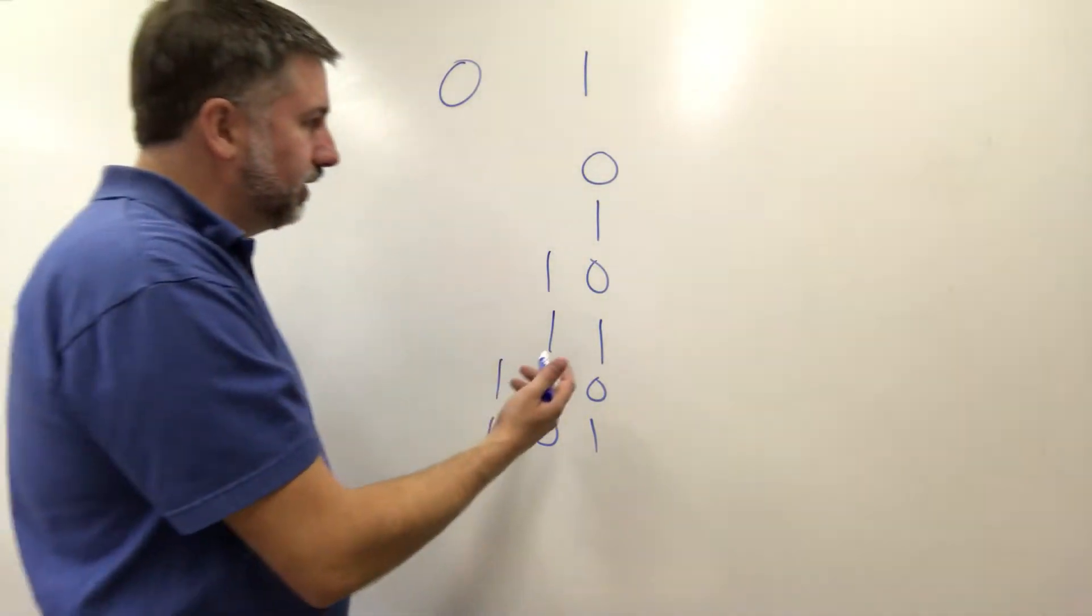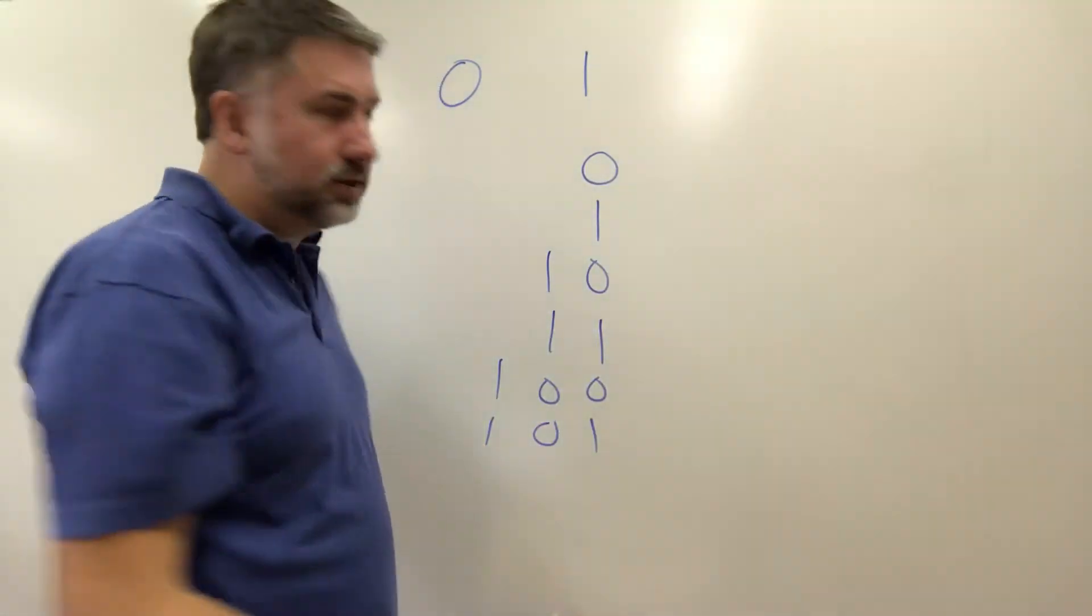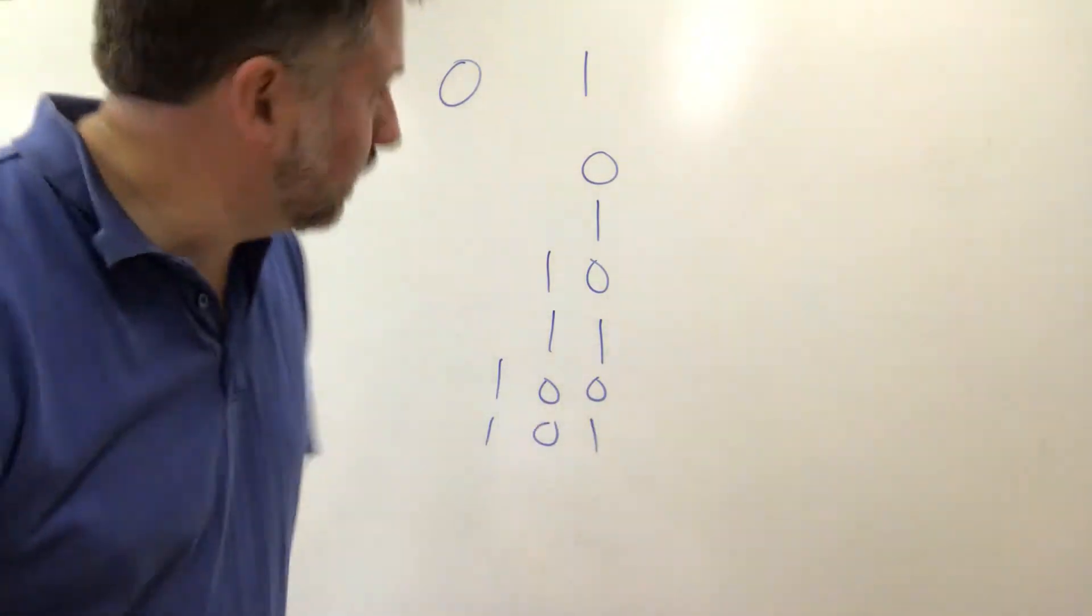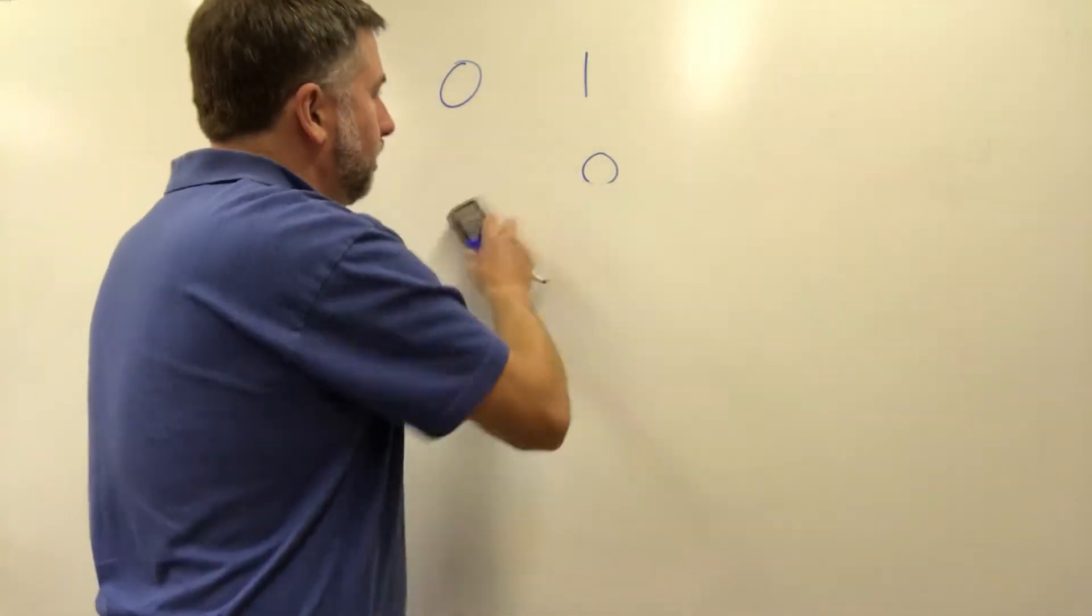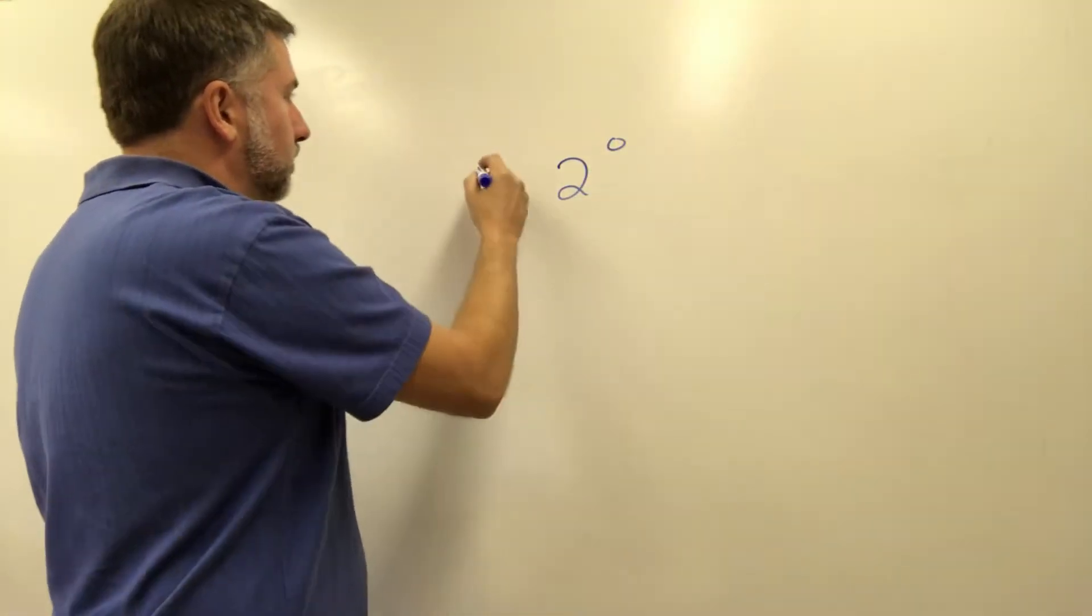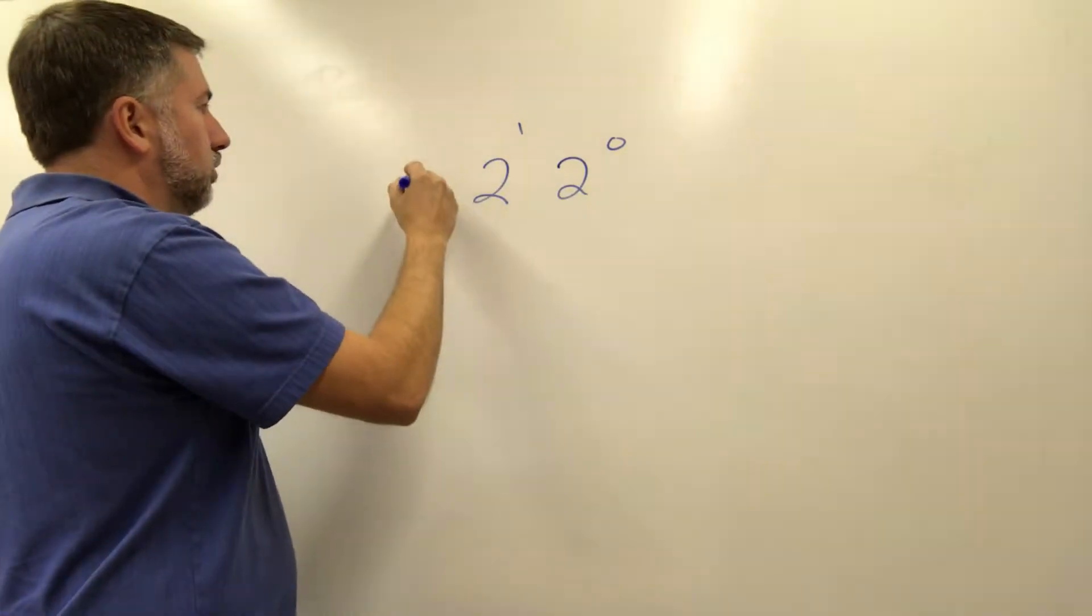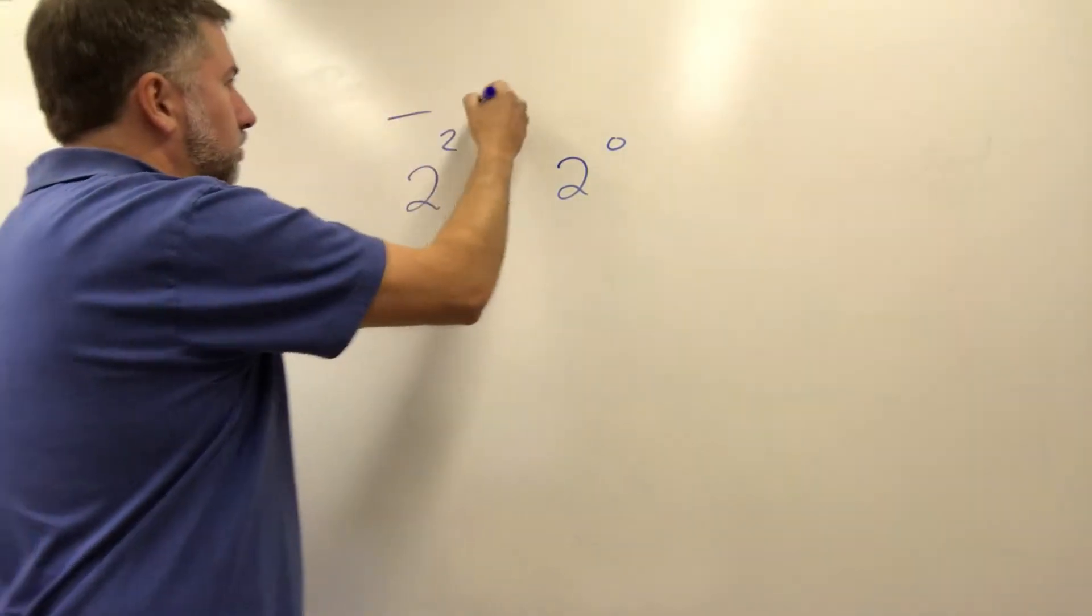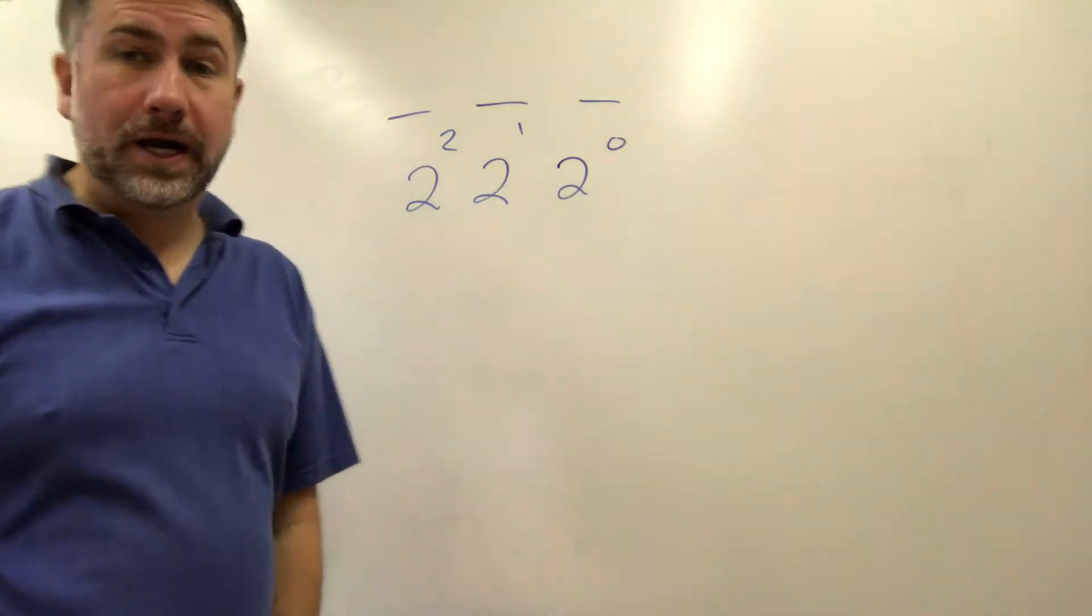So what we find is that the first place value isn't a power of ten anymore, it's a power of two. So the first place value is going to give us two to the power of zero, and then two to the power of one, two to the power of two, and on like this. These are going to be our place values for binary numbers.